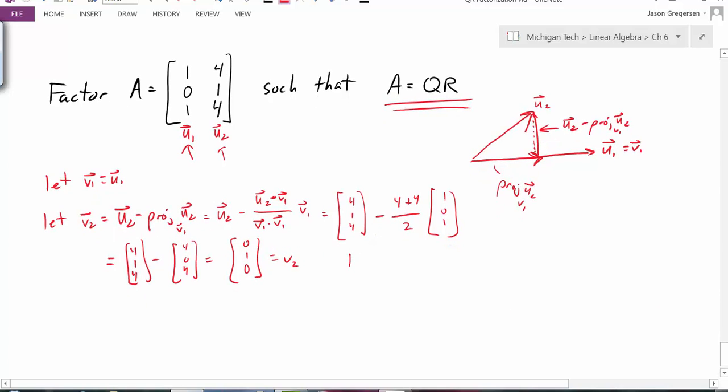So now I have a basis. I have an orthogonal basis for my column space. And that's equal to the vectors 1, 0, 1 and 0, 1, 0.